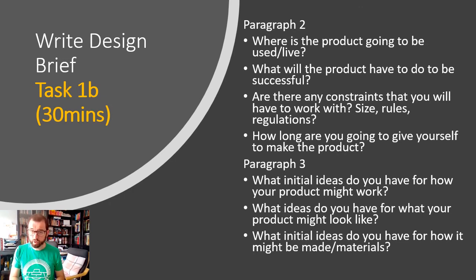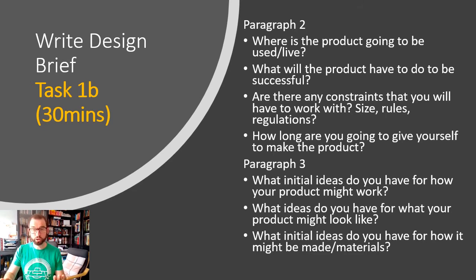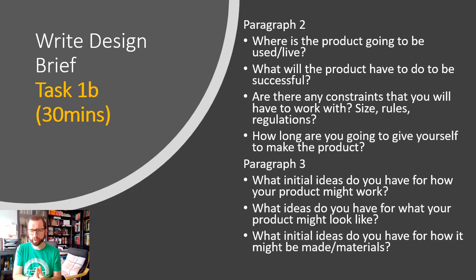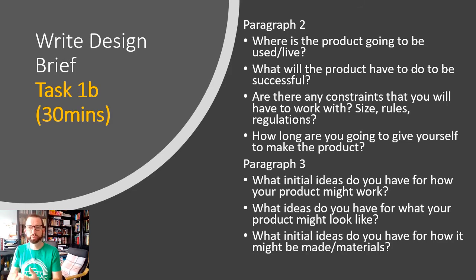Paragraph three is where you can open up a bit and talk about what initial ideas you've got for the project. If I said tomorrow you're going to start making — what would you make? What do you think you might make? Use phrases like 'I think I will make,' 'I might make,' 'my first thoughts are' — those are the types of sentence starters for paragraph three. So it's not saying what you will make, it's saying what you're thinking of making and what it might look like.